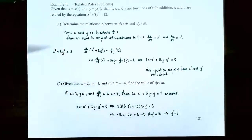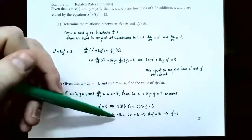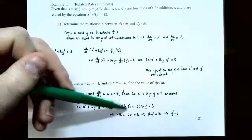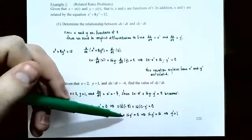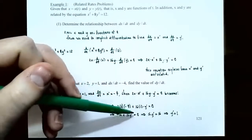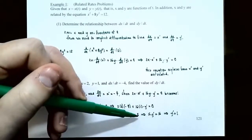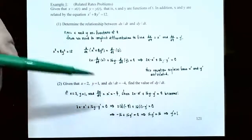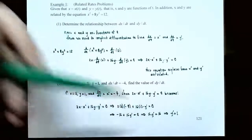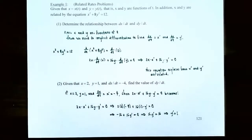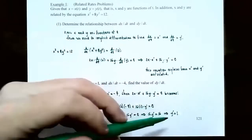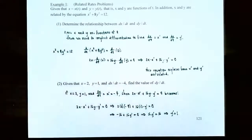Solve the equation for y prime. You have negative 16 after multiplying 2 times 2 times negative 4, plus 16 times y prime equals 0. Add 16 to both sides: 16 times y prime equals 16. Divide both sides by 16 to get y prime equals 1. So the function y is changing at a rate of 1.